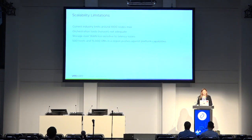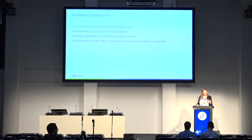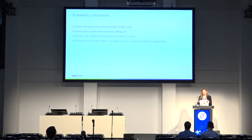Storage over WAN is way too sensitive to latency and packet loss, so being able to manage your storage the way you typically do in an OpenStack cloud isn't really feasible over these architectures. You have to break it and have different storage pods defined in each location, which makes administration a little onerous. When you're looking at over 500 hosts and 15,000 VMs in one region, but then also have multiple regions within the same topology, you're really bumping up against the limits of what OpenStack is currently capable of today.